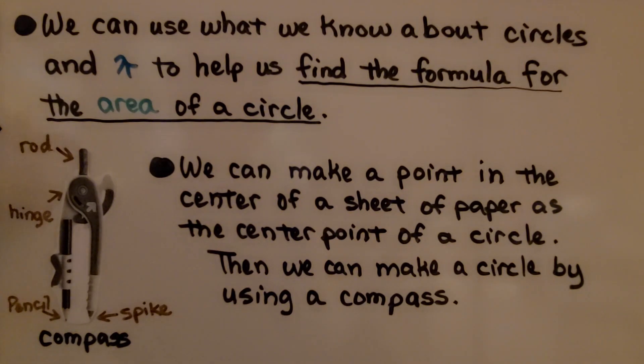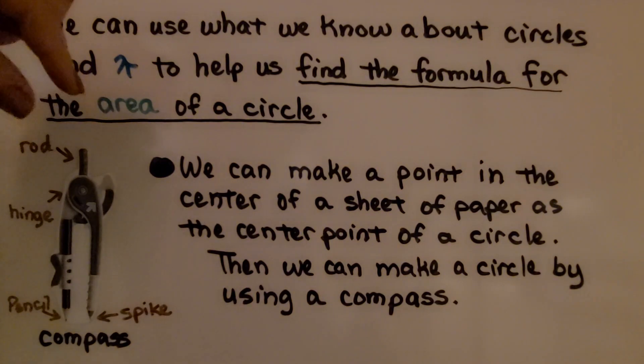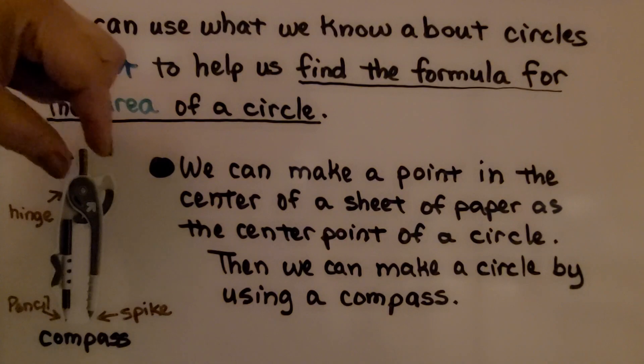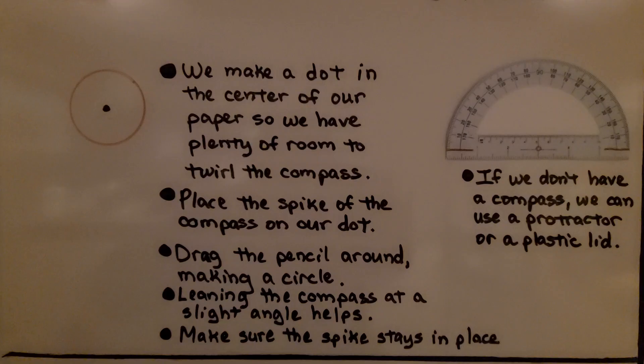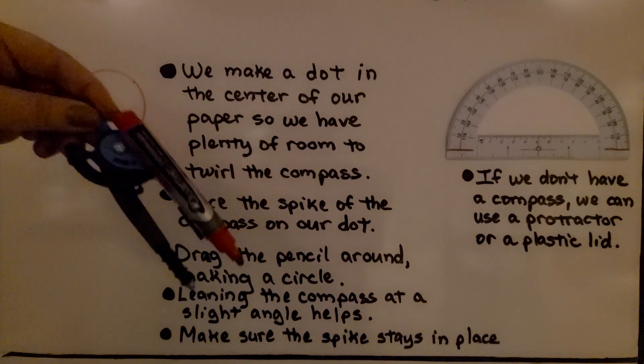At the top of the compass is a short rod about a half inch long that can be used to rotate the compass between the index finger and thumb, like that. Just put it on the rod like that.